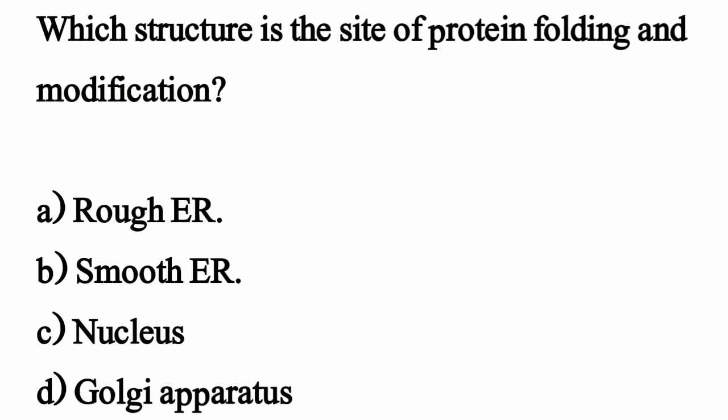Which structure is the site of protein folding and modification? The correct option is Option A: Rough Endoplasmic Reticulum.